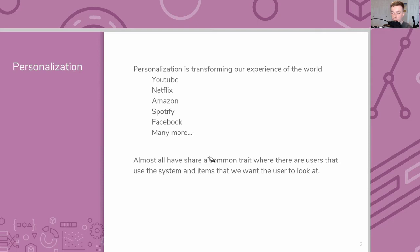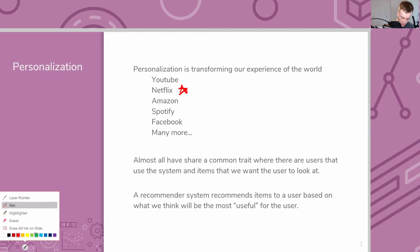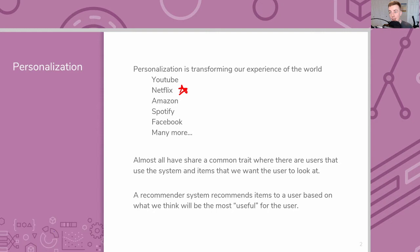At a very high level, recommender systems are almost always focused on having a system with users and products, and they want to find a set of products to recommend to the user based on that user's preferences. A recommender system's job is to recommend which items or products a user will like, or maybe bring the most utility to a user, based on the user's abstract notion of preferences. In this lecture we're really focusing on recommending movies to users, but you could just switch all our terminology to which product to recommend.